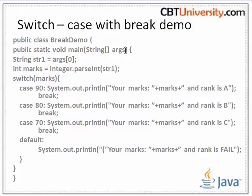So in this demo, we are sending an argument and passing it to integer — that is 'marks'. The marks variable goes to switch as a parameter. The case labels specify: if the marks are 90, it will print this message — 'your marks and the rank'. Without break, it continues to the next case. The default case at the end is executed when the above cases are not met. Let us go for the demo.